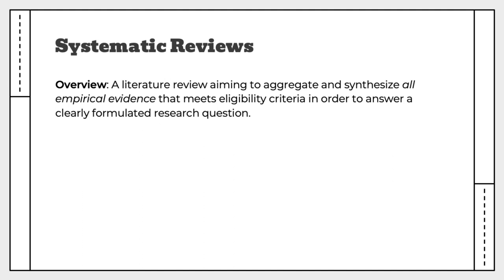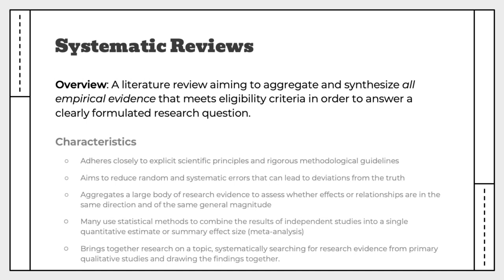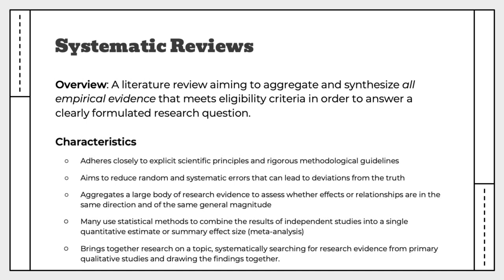Next, we have systematic reviews. These are literature reviews aiming to aggregate and synthesize all empirical evidence to answer a clearly formulated research question. Systematic reviews seek to identify causation and adhere closely to scientific principles and methodological guidelines, trying to reduce random and systematic errors. They aggregate a large body of research evidence to assess whether effects or relationships are in the same direction and of the same general magnitude. Systematic reviews are known as meta-analyses when they use statistical methods to combine results of independent studies into a single quantitative estimate. They can also be qualitative, bringing together primarily qualitative studies, in which case they draw on qualitative synthesis methods.